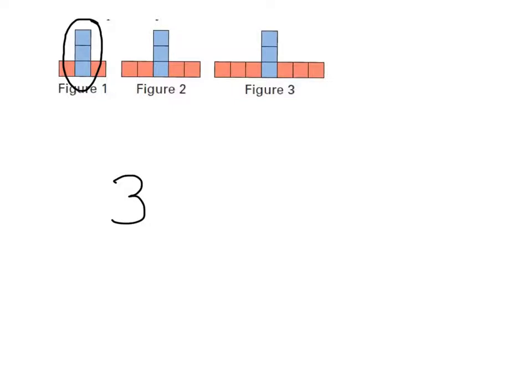Unlike the blue blocks, each of our figure numbers has a growing number of red blocks. That number changes, that means it's variable depending on what figure number we're looking at. In figure one there are two red blocks, in figure two there are four red blocks, and in figure three there are six red blocks.